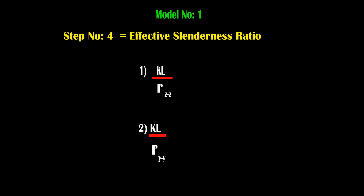Step number 4 is effective slenderness ratio. Since we have two radii of gyration — in ZZ direction and YY direction — we get two effective slenderness ratios. The general formula is: effective slenderness ratio = effective length divided by radius of gyration. The first is effective length divided by radius of gyration in ZZ direction; the second is effective length divided by radius of gyration in YY direction.